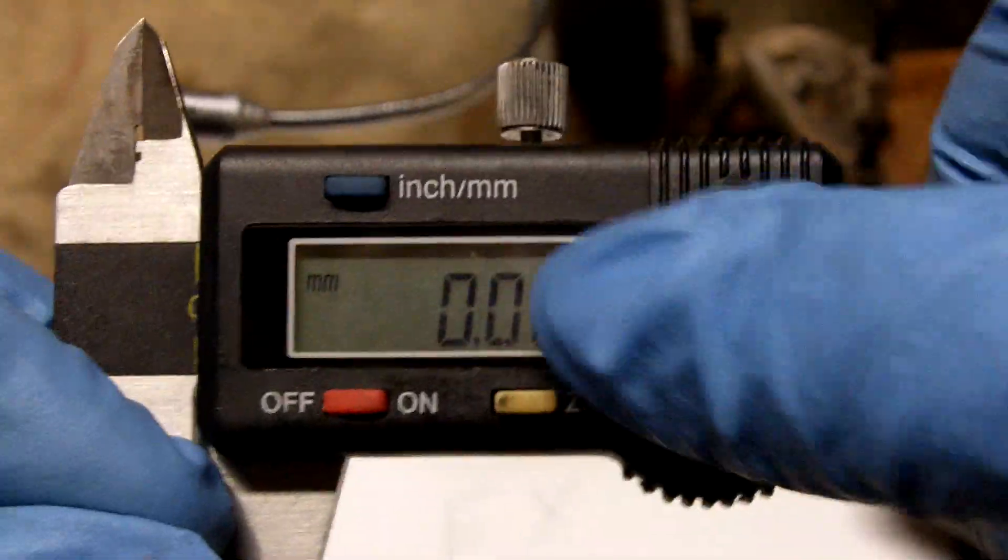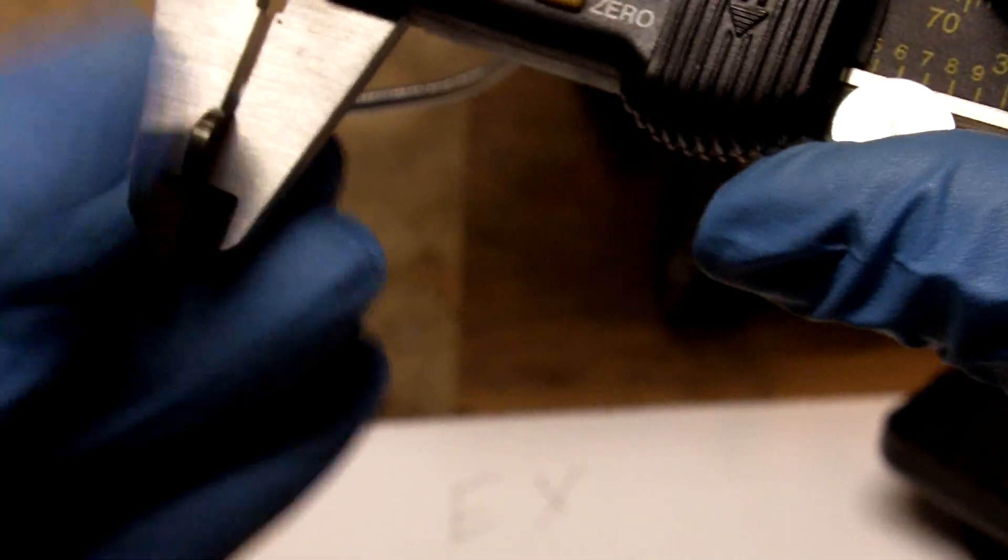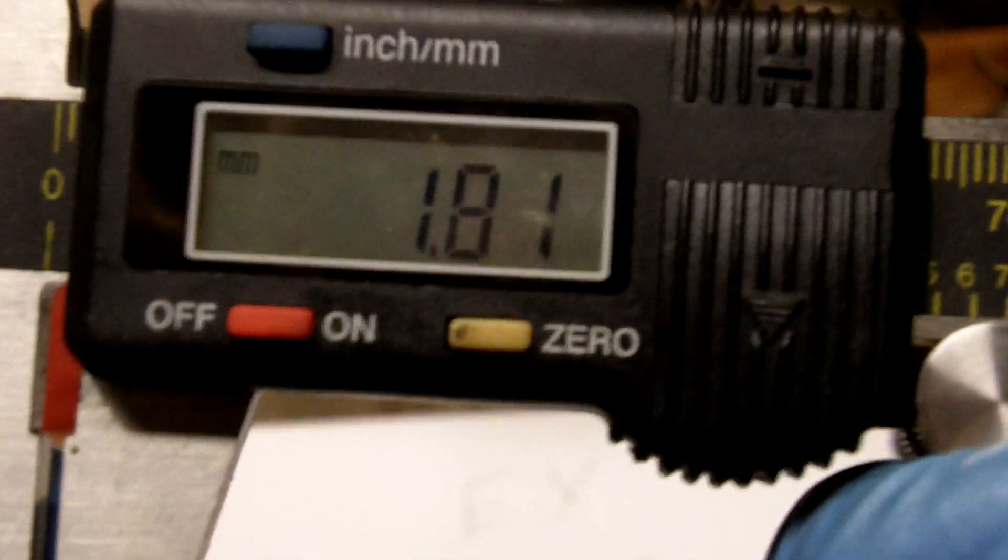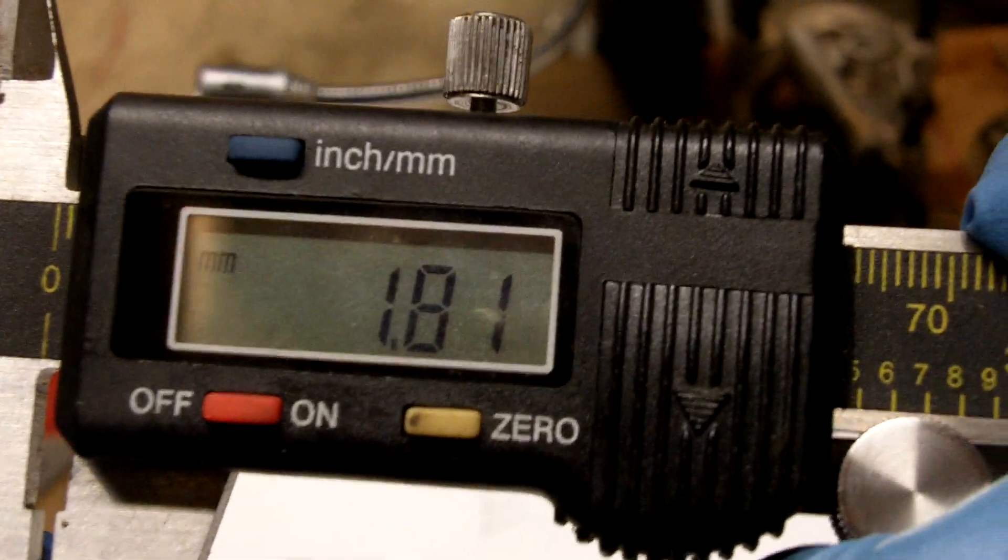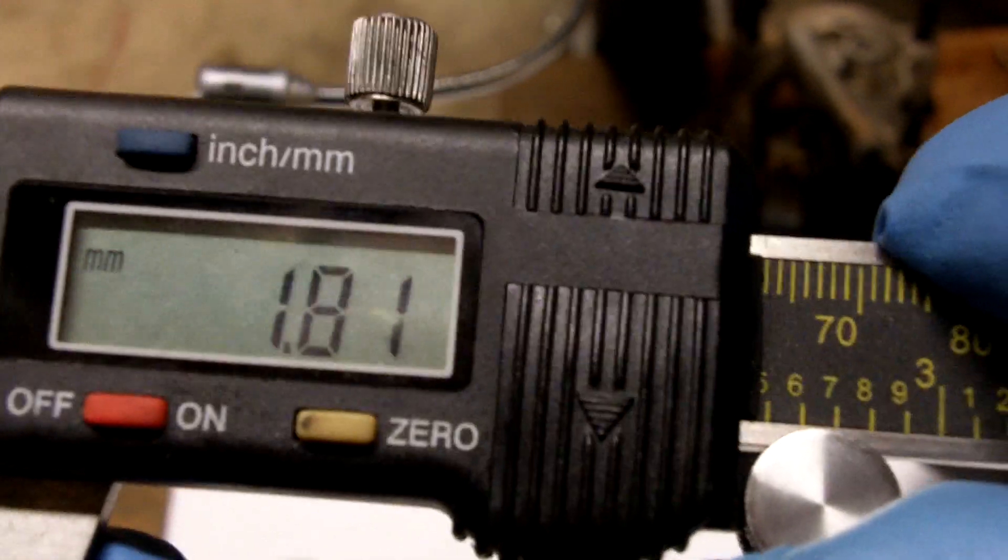Basically what you do is you just turn it on, make sure it's zeroed out. You just open it up, slide your shim in, just like that, as you see here, and close it up.